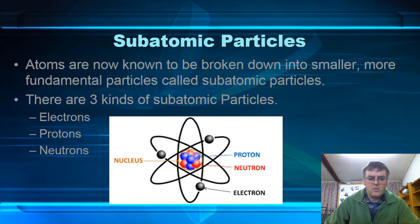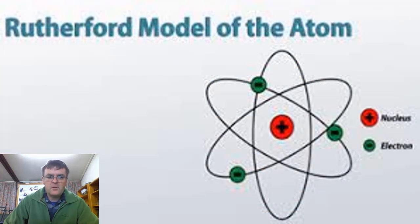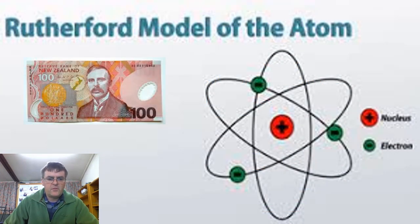Now the model of the atom that we use is this one here, the Rutherford model of the atom. So there's Ernest Rutherford on our $100 note, and his proposed model of the atom was that pretty much everything was in the nucleus, it was positively charged, and negatively charged electrons were whirling around that in a cloud around the outside, but basically most of the atom was empty space.